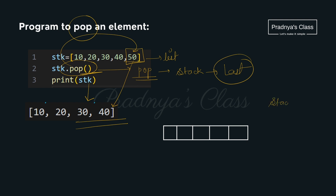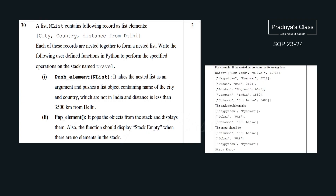Based on stack, you will get a 3 or 4 mark question in which you need to write a user defined function to perform push or pop operation. Now let's solve a question from the recent sample question paper. Here is a list named end list with nested records. We need to write user defined functions to perform specified tasks on the stack named travel. The push element function takes end list as a parameter and pushes a list containing the city name and country, but only for cities not in India and with a distance less than 3500 km from Delhi.